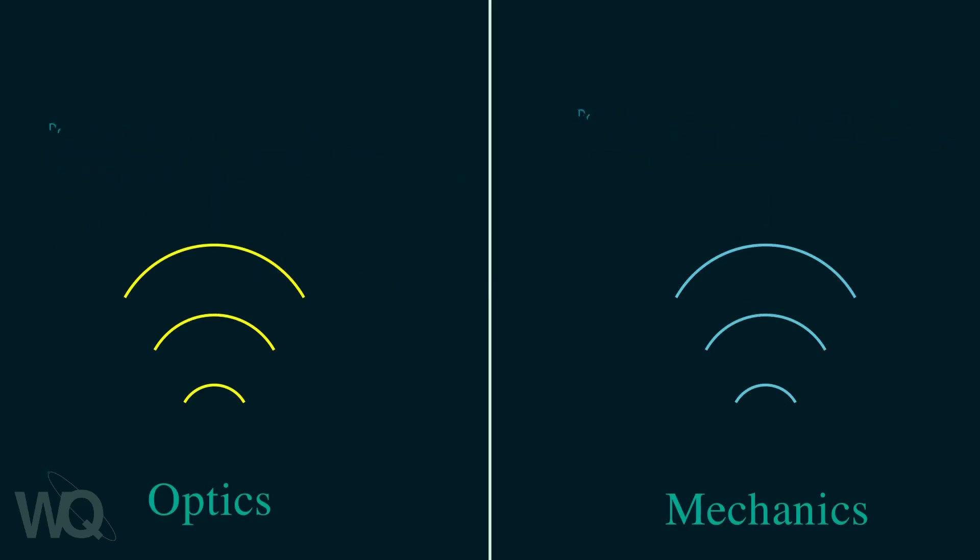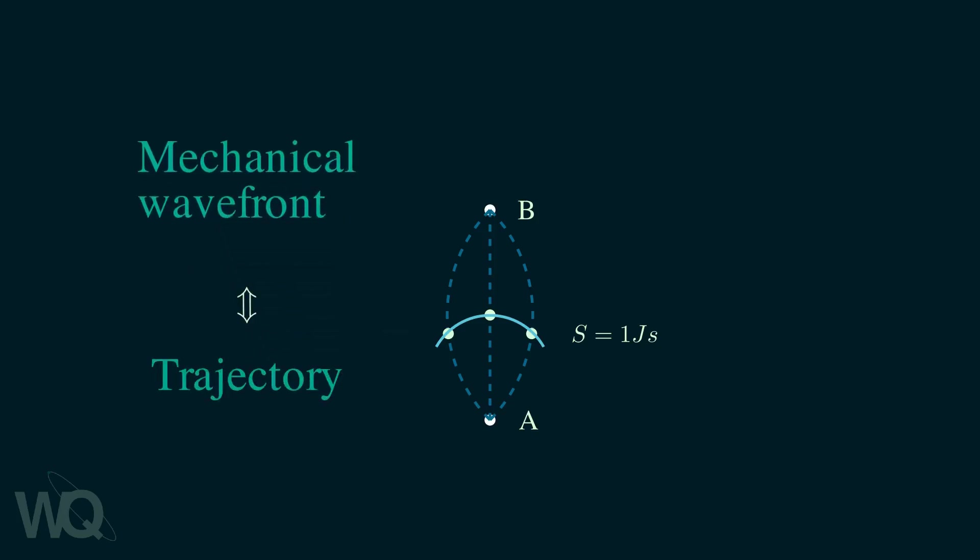Just like the optical wave front you can construct the mechanical wave front as follows. Start by considering all the paths that a particle could take. Along each of those paths find the points that have the same action. Say you mark all the points where the action is one joule second. This set of points is your mechanical wave front. And just like with light if you have a particle's trajectory you can create the mechanical wave fronts and from the wave fronts you can also recreate a particle's trajectory.